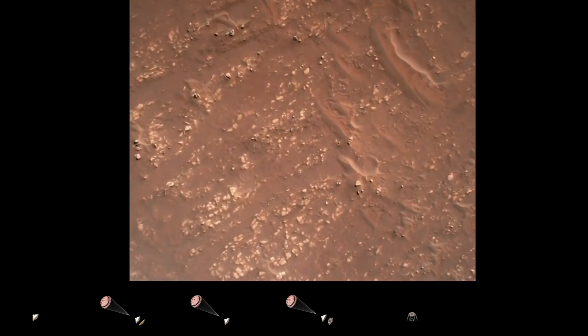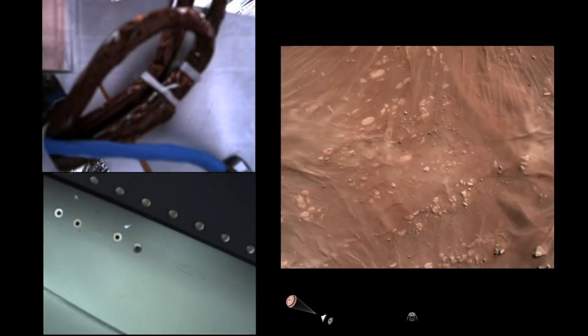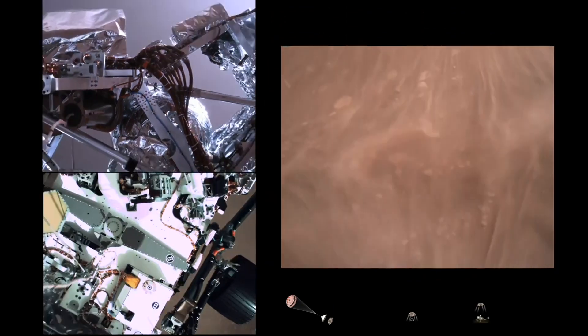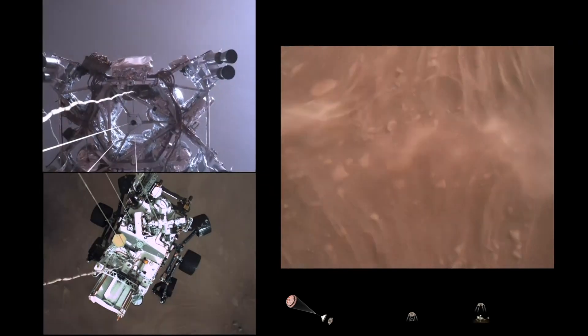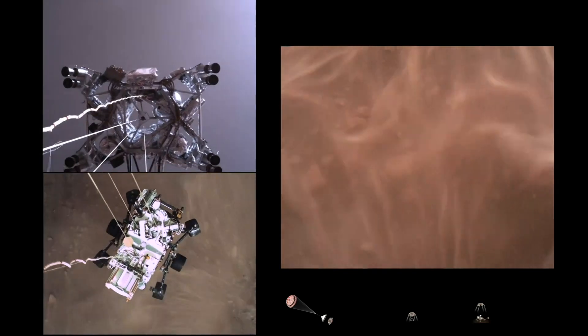We have started our constant velocity accordion, which means we are conducting the sky crane, about to conduct the sky crane maneuver. Sky crane maneuver has started. About 20 meters off the surface.